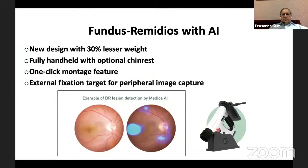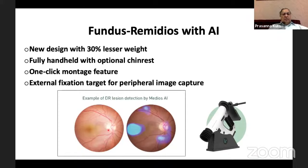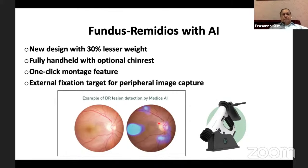A handheld AI-enabled fundus camera — the Remidio camera — weighing about one to one and a half kg with an optional chin rest and one-click montage feature, takes a very clear fundus photograph. You can see the fovea and optic disc clearly. If there is an abnormality, artificial intelligence marks the doubtful areas. If you screen 100 patients and 5 to 6 show such findings, refer them to an ophthalmologist for further evaluation. If the fundus is normal, review after one year. Management: a stepwise approach to manage hyperglycemia, with GLP-1 analogues, good diabetes and blood pressure control.